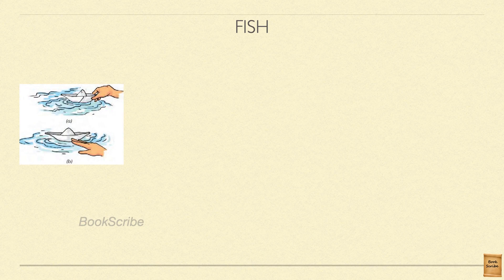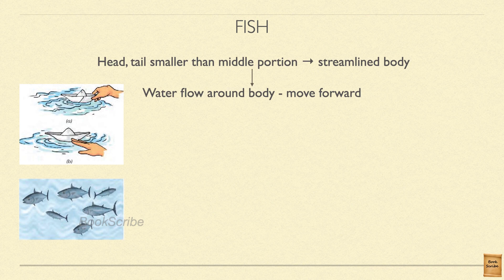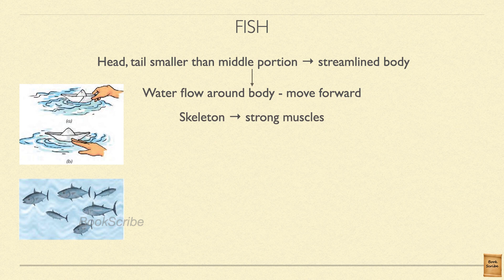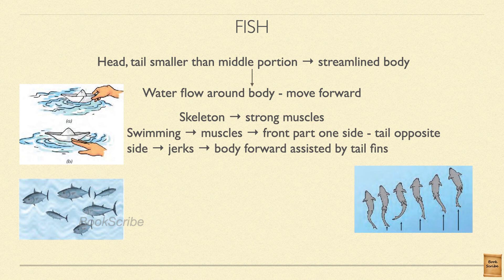During rainy season, you must have made paper boats and set them to sail in water on the roads. The shape of a boat is almost similar to the shape of a fish — the head and tail are smaller than the middle part. This type of shape is called streamlined. Boats, ships, and fish all have streamlined shapes, which is why fish can swim inside water easily. The fish has a skeleton inside — the central part is full of bones — and outside this skeleton is fully covered with muscles that help in movement. When swimming, the muscles make the front part tilt to one side while the tail swings in the opposite side.